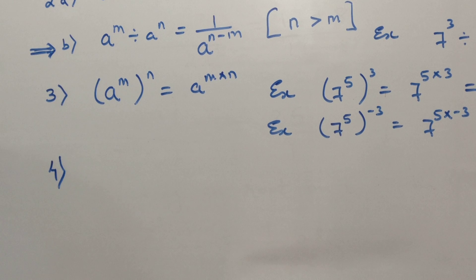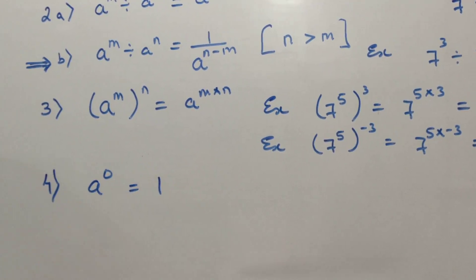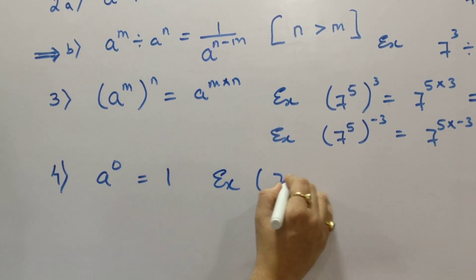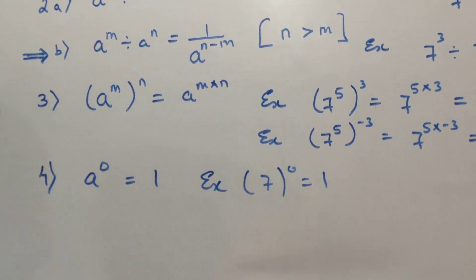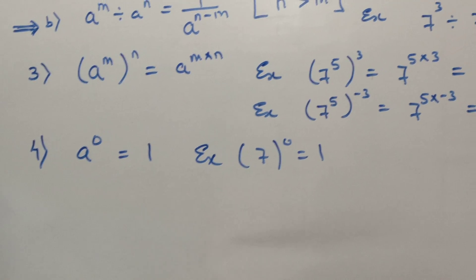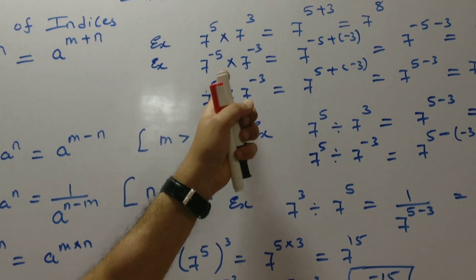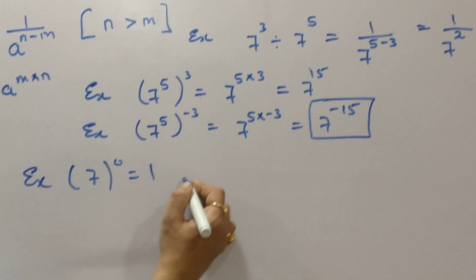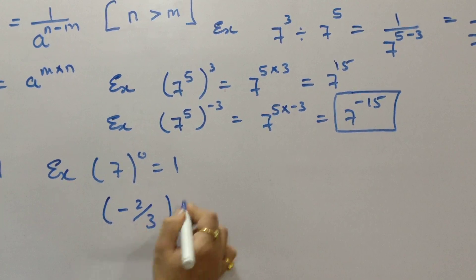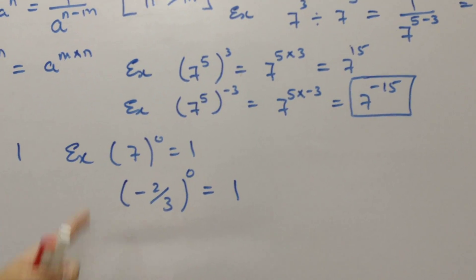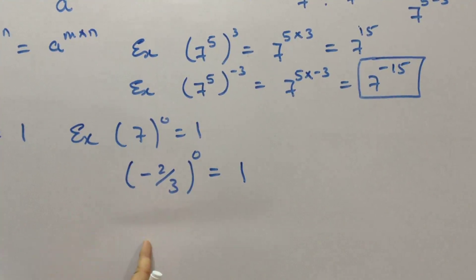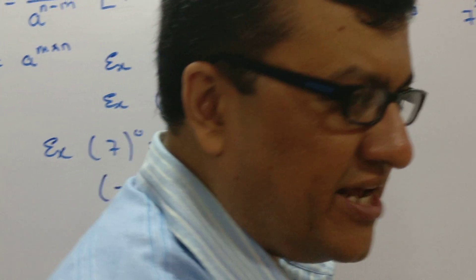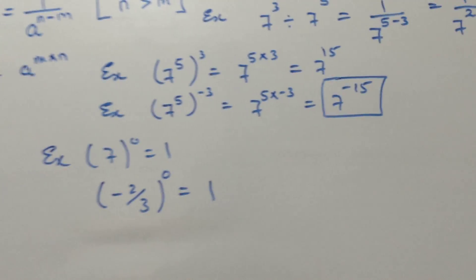Law 4: A raised to 0 is 1. Anything raised to 0 happens to be 1. For example, 7 raised to 0, answer is 1. The base doesn't always need to be positive — it can be negative. Minus 2 by 3 raised to 0 is also 1. The base can also be a fractional value. In general, anything raised to 0 is 1.